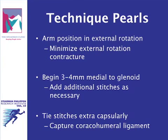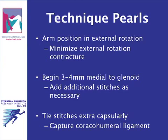If closure is performed, several tips may help maximize its efficacy. As described by Garzman and others, tensioning the closure in 30 degrees of external rotation should minimize external rotation contractures. In addition, placing the medial stitch 3–4 mm from the glenoid and tying each stitch extracapsularly helps to capture the maximal amount of tissue, making the closure as robust as possible. Additional stitches may also be placed more laterally as necessary to achieve the desired closure magnitude.